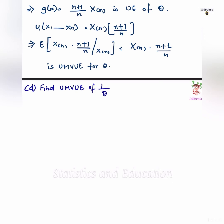Question D. Here we have to find UMVUE for 1 upon theta. And we have the PDF as...